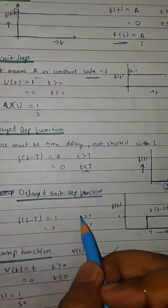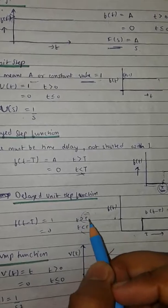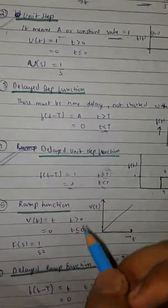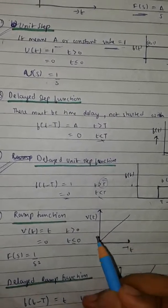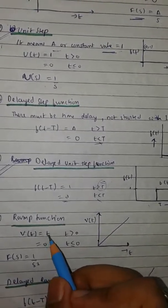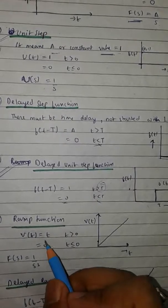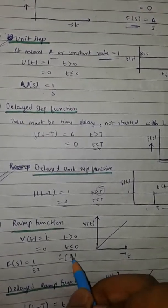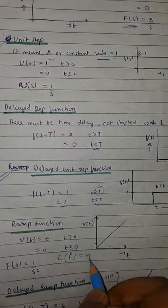In a similar way, for the delayed unit step function, combining the effects of both unit step and delayed step: f(t minus T) equals 1 for t greater than capital T, which is the time period, and for remaining values it is 0. Now the ramp function — it is just a straight line.